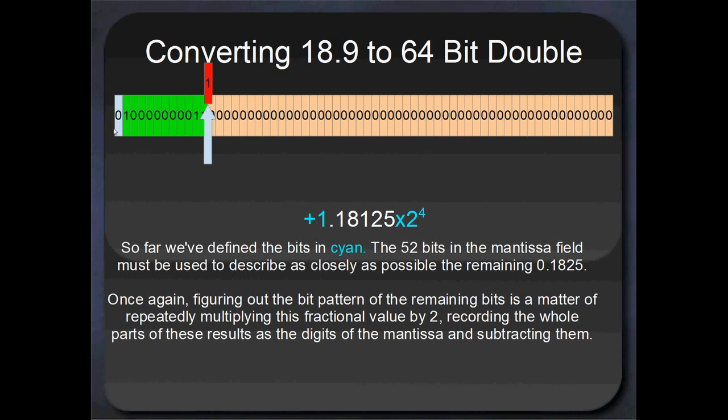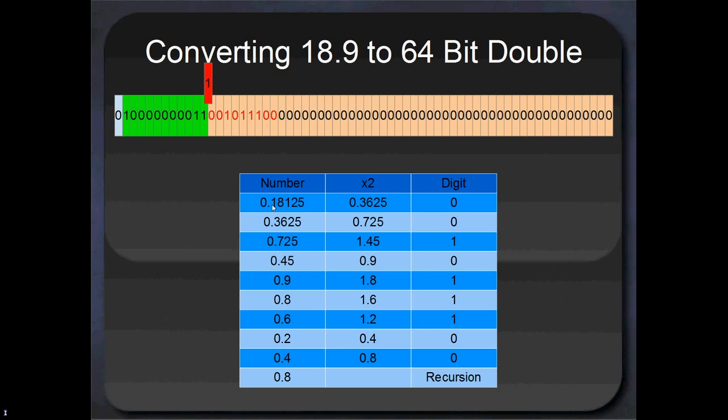So far with these three little parts - the sign, the exponent and the implied mantissa bit - we've explained positive 1 multiplied by 2 to the power of 4. And it's the mantissa's job to explain with its 52 bits, 0.18125. And once again we can use exactly the same algorithm as the single precision. We just continuously multiply these fractional parts by 2 and record the whole part as our digits as we go, subtracting 1 if we get them. First up we do 0.18125 multiplied by 2, gives us 0.3625. The whole part to that is obviously a 0, so we record that as our first digit in the mantissa, and we don't have to subtract anything from that.